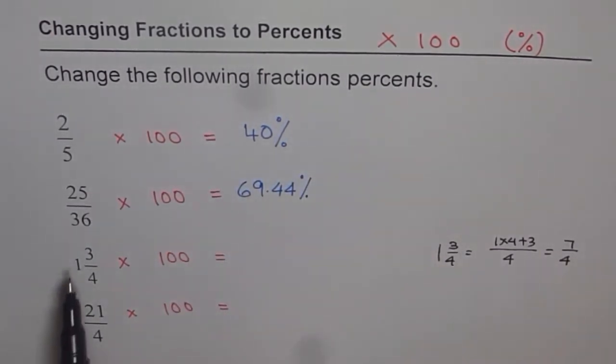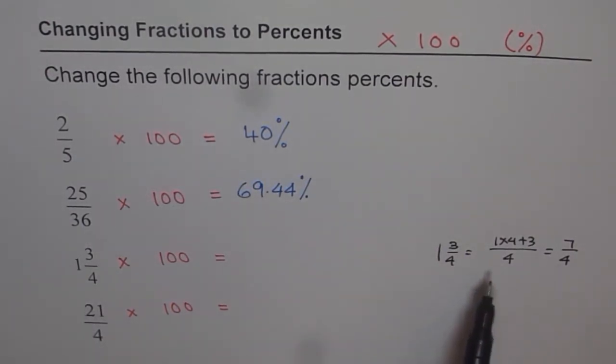Now here, we convert mixed numbers into improper fractions as I have shown you. So we get 7 divided by 4 times 100. 175 percent.